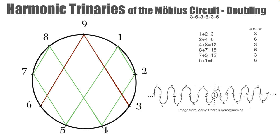Once again, we've got this repeating digital root pattern of 3, 6, 3, 6, 3, 6. I've just added an image there that's just taken from Marco Rodin's book, Aerodynamics, which just shows this in another form there.